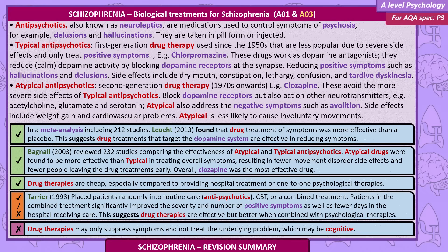Atypical antipsychotics are second-generation drug therapy from the 1970s onwards — for example, clozapine. These avoid the more severe side effects of typical antipsychotics. They block dopamine receptors but also act on other neurotransmitters such as acetylcholine, glutamate and serotonin. Atypical antipsychotics also address negative symptoms such as avolition. Side effects include weight gain and cardiovascular problems.